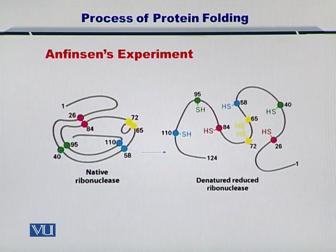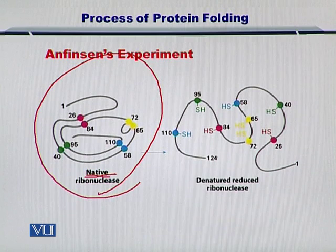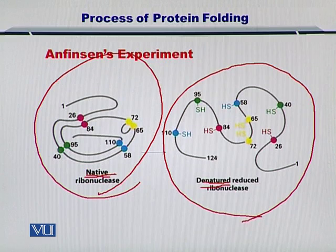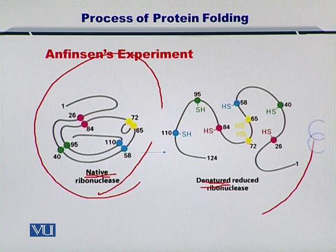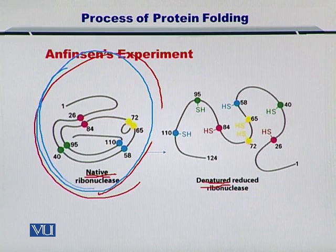Anfinsen's experiment showed us a very interesting insight into this folding process. He took a ribonuclease in its native folded form, and then he denatured it and it got converted into a linear chain — so essentially, this is unfolding a protein. Once he was able to achieve this, the unfolded protein lost its function and was no longer able to perform the functions it had in its folded shape.